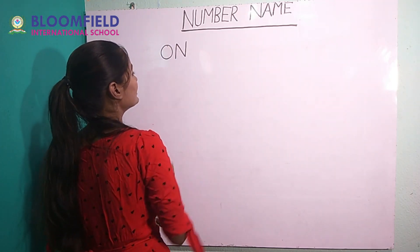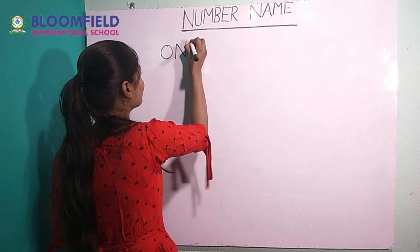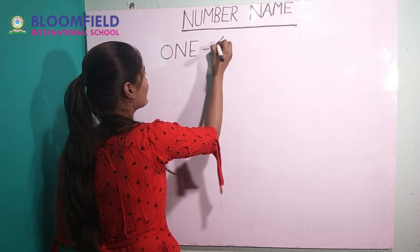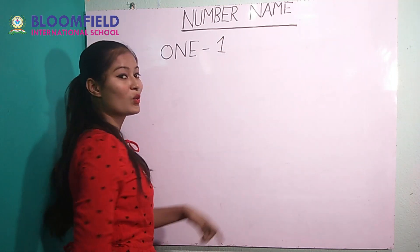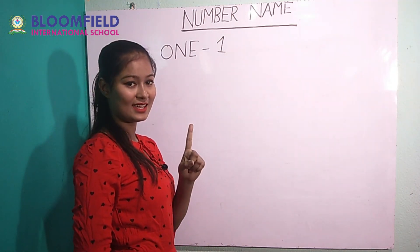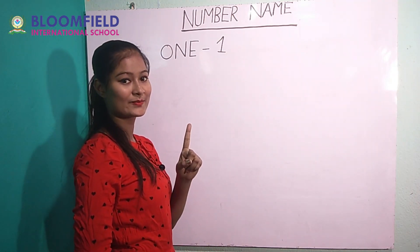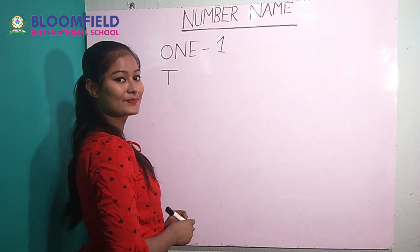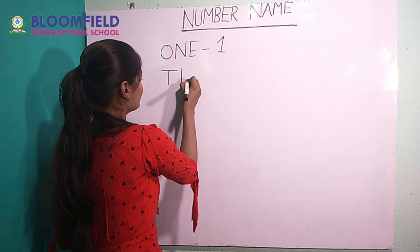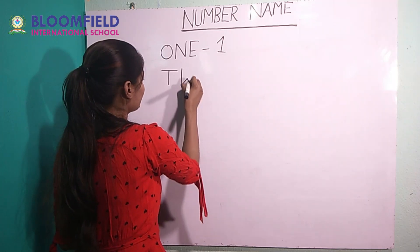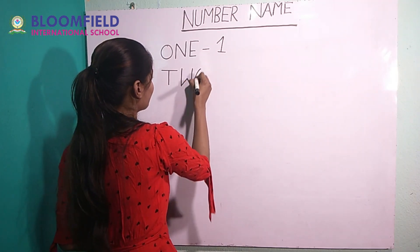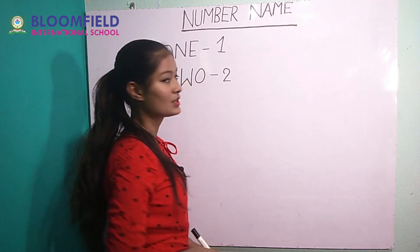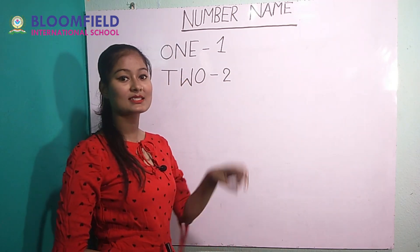O-N-E. One. One means ek. T-W-O. Two. Two means do.